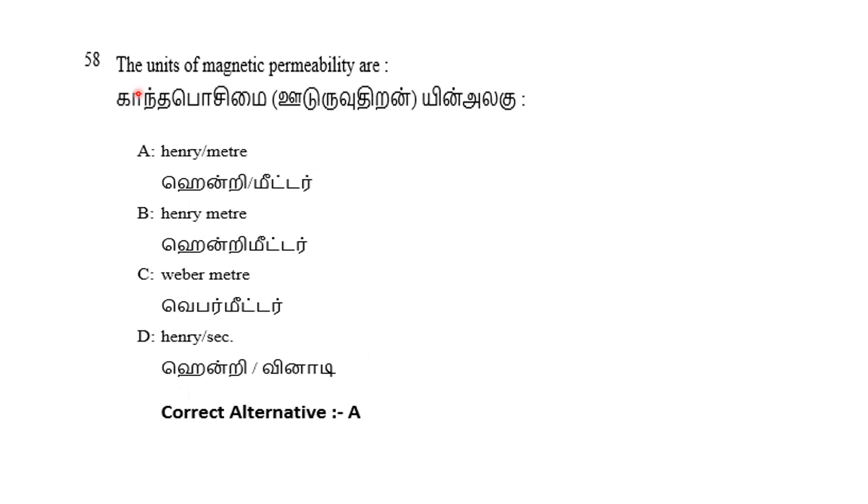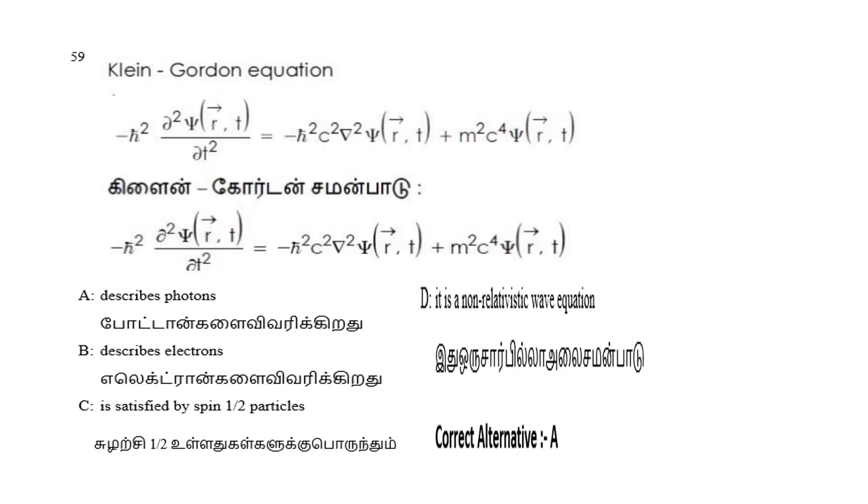The next question: the units of magnetic permeability are - simple, easy question, one mark you can see. Units, definitions, concepts, basics - these are all strong, repeated questions. So magnetic permeability unit is Henry per meter. Option A is the correct answer.